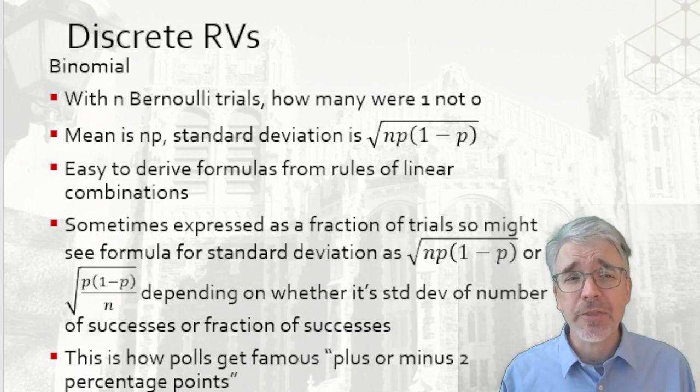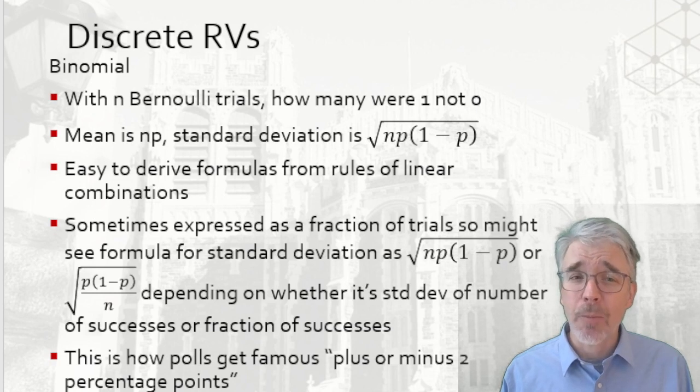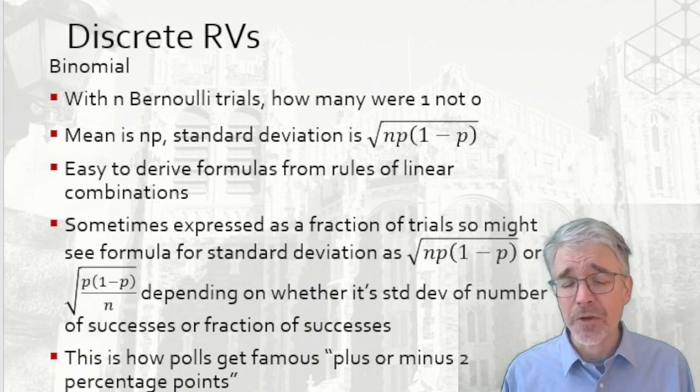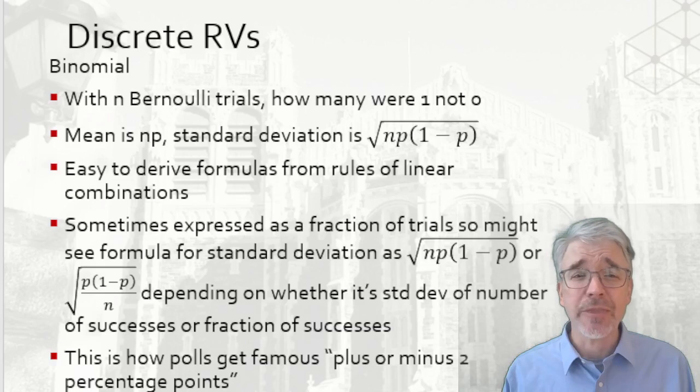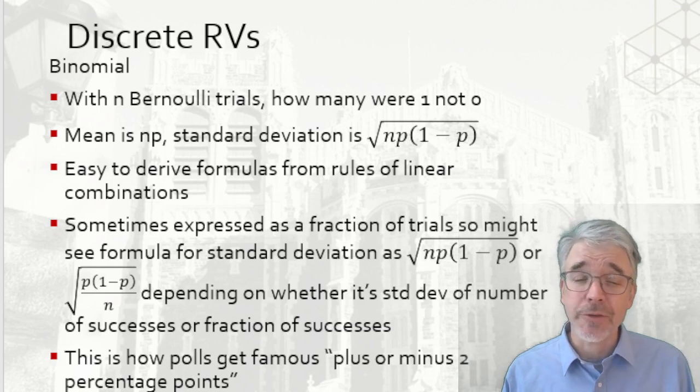The only tricky thing is sometimes people talk about the sum of the variables, how many are yes, or sometimes they're talking about the fraction that are yes. For example, if I have a hundred Bernoulli trials and 60 of them come up success, then I might record that as 60, or I might record that as 60% or 0.6.